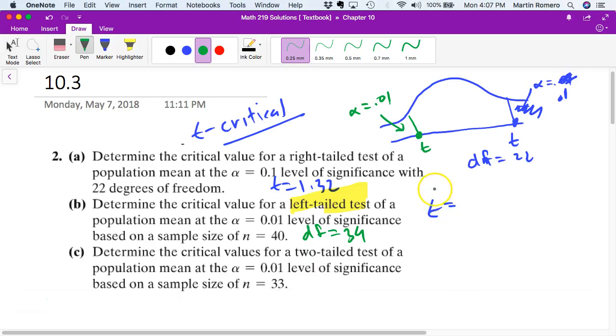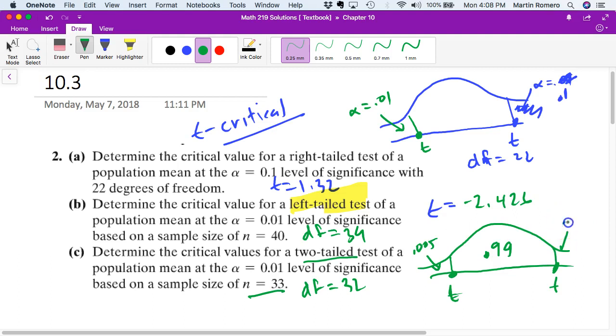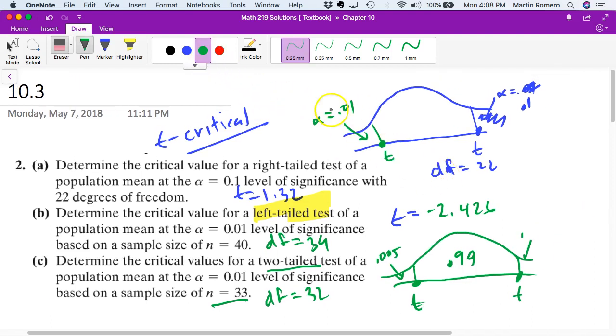For some reason the back of the book has that instead of 2 decimals. And so this is negative 2.426. Now this one here you have a two-tailed test. n is 33, so degrees of freedom would be 32. And in this case here we're looking for critical T values on these sides over here. And in the end alpha is 0.01. So this is 0.99 in between or 99%. So here is going to be 0.005 and 0.005. So we need two values here.